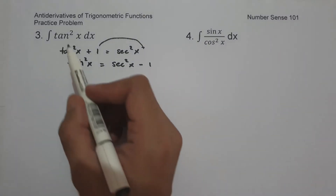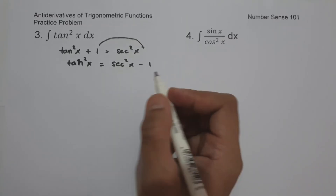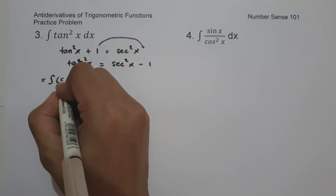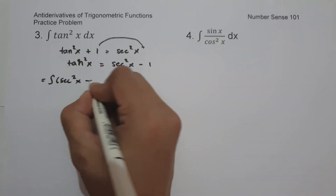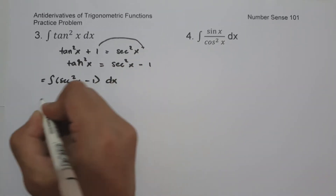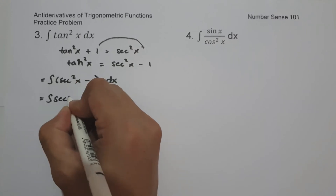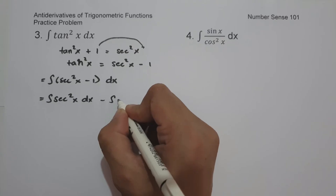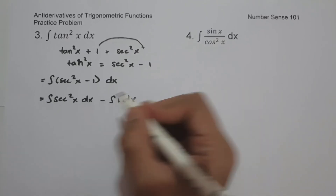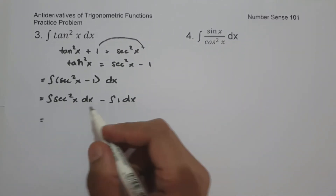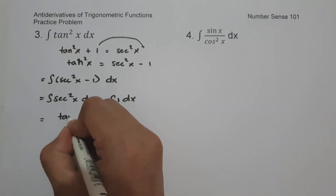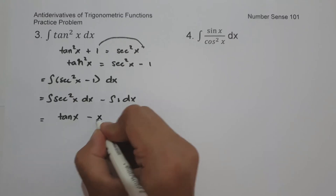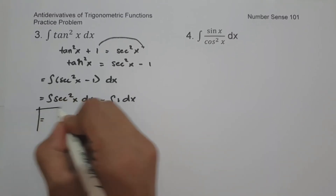Therefore, the value of tangent square x is equal to secant square x minus 1. So let us have the antiderivative of secant square x minus 1 dx. That is the antiderivative of secant square x dx minus the antiderivative of 1 dx. The antiderivative of secant square x dx is tangent x, minus the antiderivative of 1, that is x, plus c. This will be our answer.